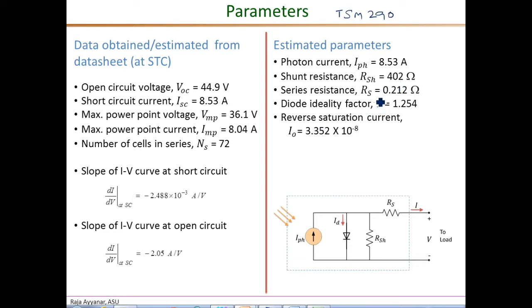And the results that we obtained was a series resistance of 0.2 ohms, ideality factor 1.254 and a reverse saturation current of roughly 33 nano amperes. So these correspond to this single diode based PV model. And all of these values correspond to the complete module, meaning it corresponds to the 72 cells in series.